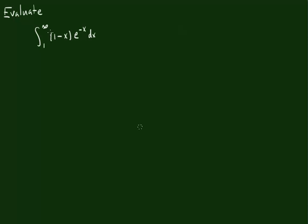Hello all. We're going to evaluate an improper integral today, and hopefully everybody remembers that an improper integral is really just a combination between a limit and an integral. So we're going to evaluate the improper integral from 1 to infinity of 1 minus x times e to the negative x dx.